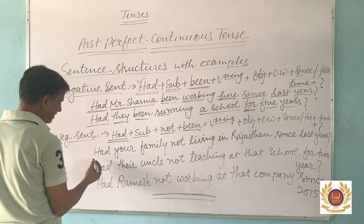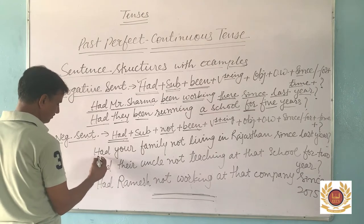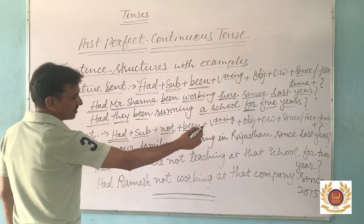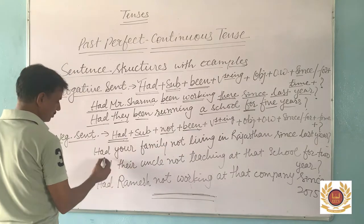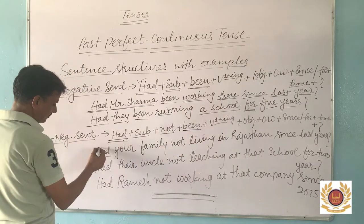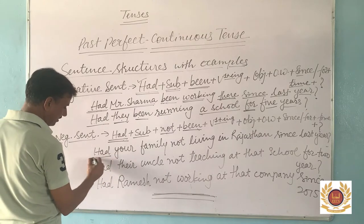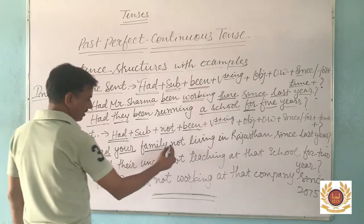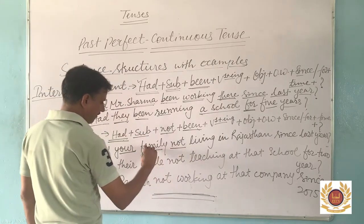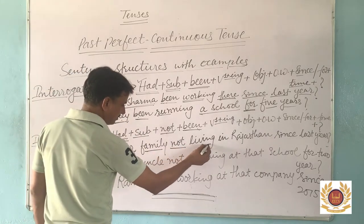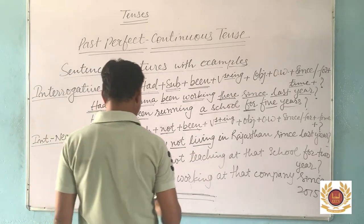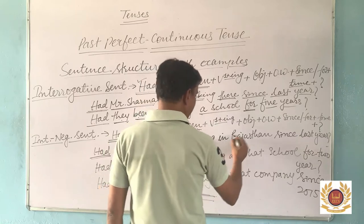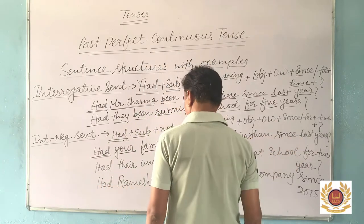Example of an interrogative-negative sentence: 'Had your family not been living in Rajasthan since last year?' We have started with 'had' as the helping verb, 'your family' is the subject, 'not' is set after the subject, and then 'being living' — 'living' is the first form of verb with '-ing', 'in Rajasthan' is the location, 'since last year' uses 'since' because 'last year' is a point of time, and a question mark.